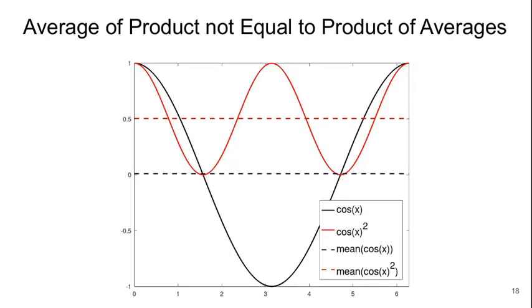So here's what that looks like. So the black solid curve is, of course, cos of t, or cos of x in this case, and the dashed black line is the average of that, which of course is zero. Then the red curve is cosine squared. And this never becomes negative, obviously, because it's a something squared. And so the average value of that is actually 0.5. So the average of the product is not equal to the product of the averages.